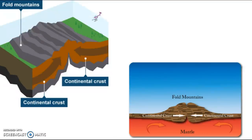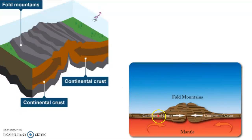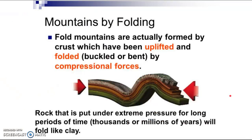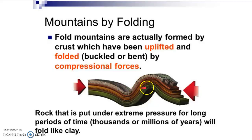Compression stress will often either fold or break rock. These are actually folded mountain ranges. Folded mountains are formed by crust which has been uplifted and folded — meaning buckled or bent by compression force. Compression force applied over thousands or millions of years will start to fold the rock.